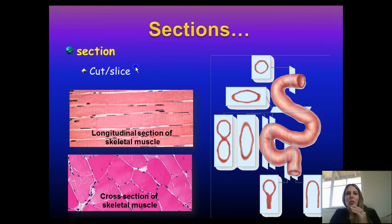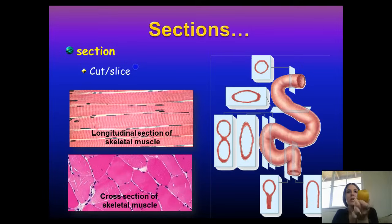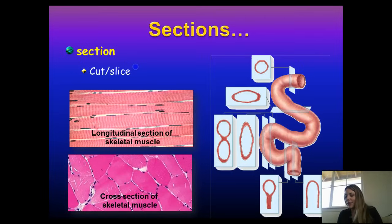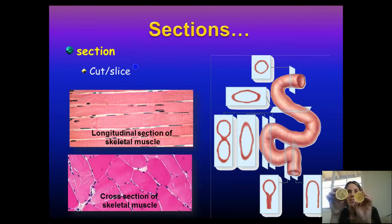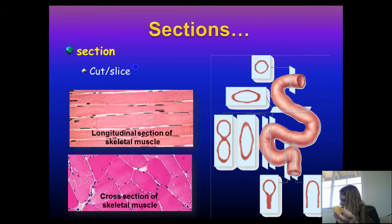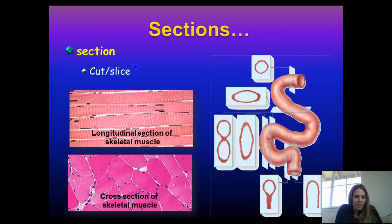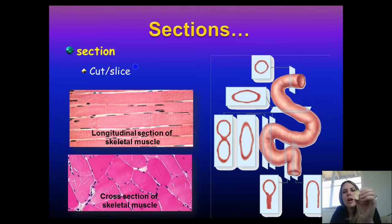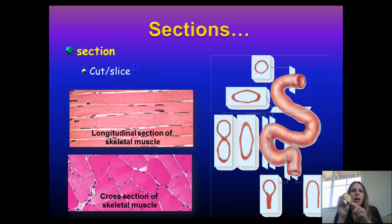A section is a cut or slice that you take. Here's a lemon — if I take a plate and cut a little bit off, I just made cross sections. Notice that one cross section looks different from another depending on where you cut. That is called a cross section because you cut across the lemon.